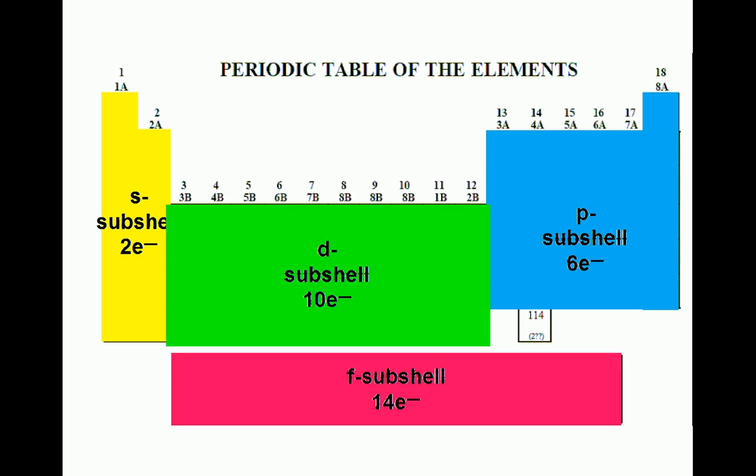The S subshell consists of one orbital which can hold two electrons. The rightmost block of the periodic table that contains the last six columns represents the P subshell. The P subshell consists of three orbitals which can hold six electrons.